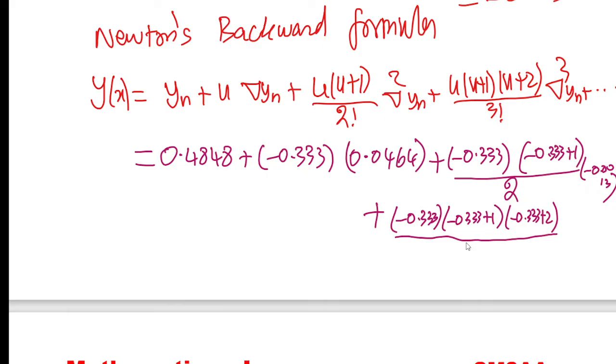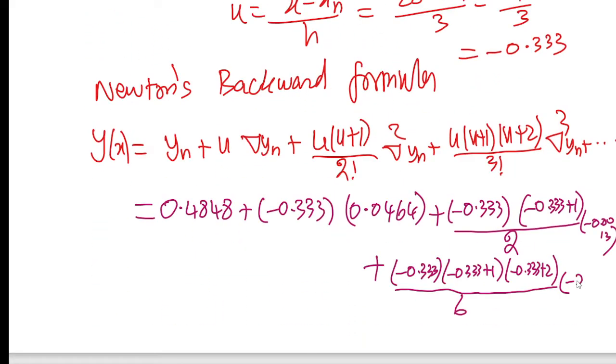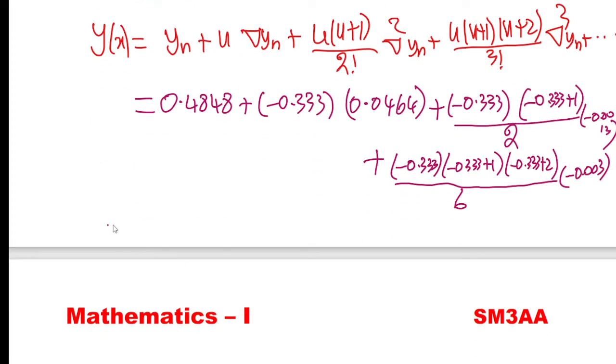So now, the value minus 0.333 again minus 0.333 plus 1, again minus 0.333 plus 2 by 3 factorial. And del cube, the last value is minus 0.003.